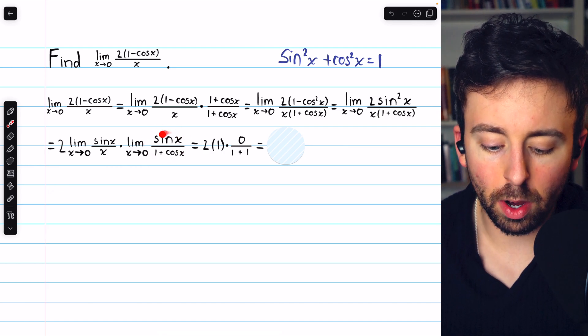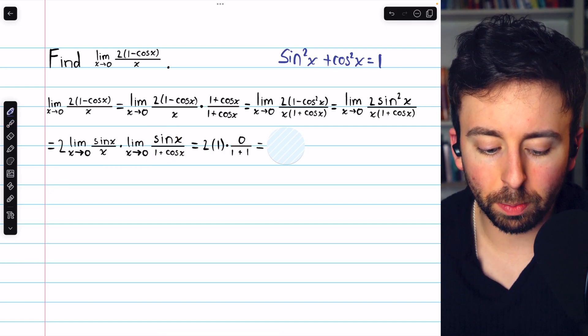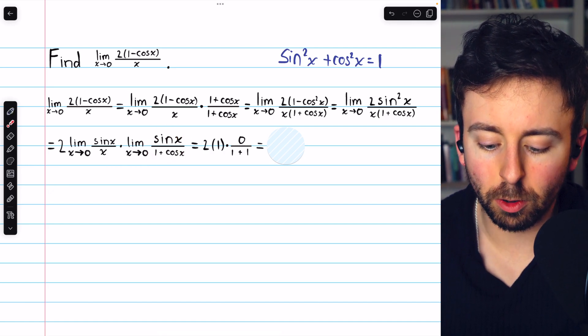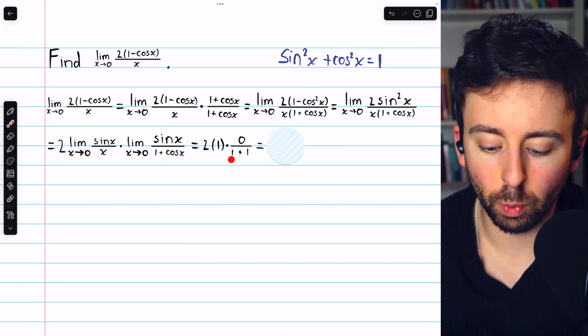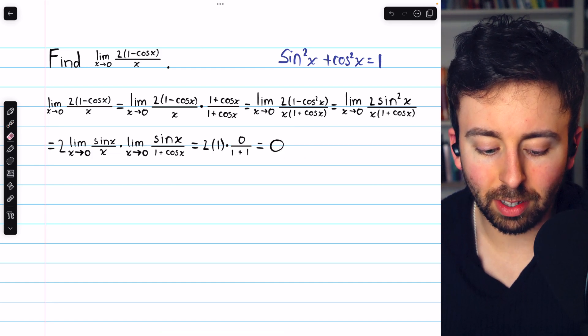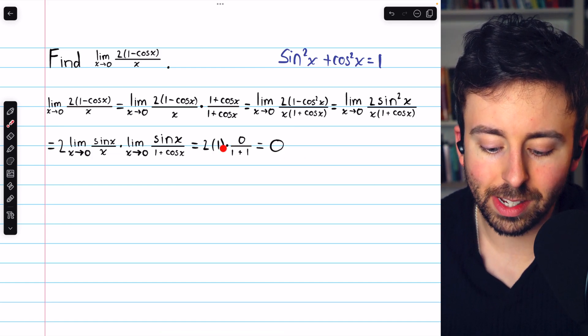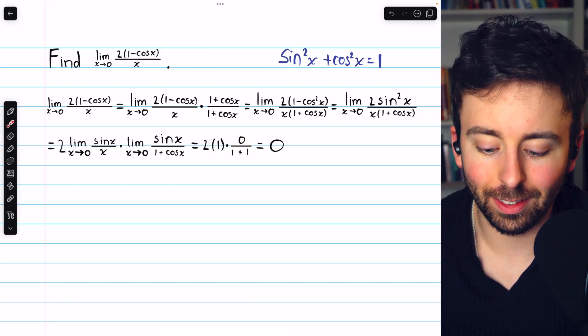And as for sine x over 1 plus cosine x, we can just plug in 0. Sine of 0 is 0, and cosine of 0 is 1. So this is 0 over 1 plus 1. And then we just have to do the multiplication. 2 times 1 times 0 is 0.